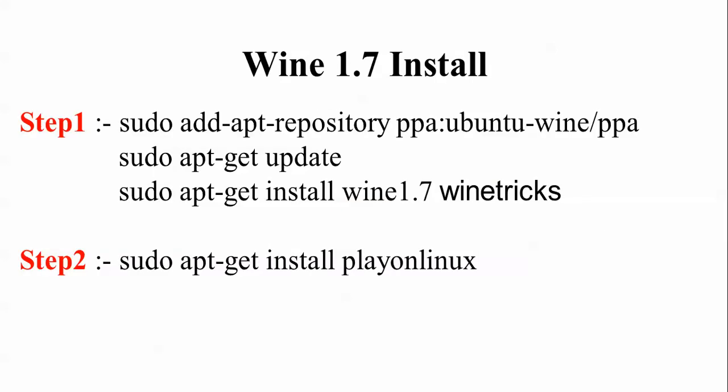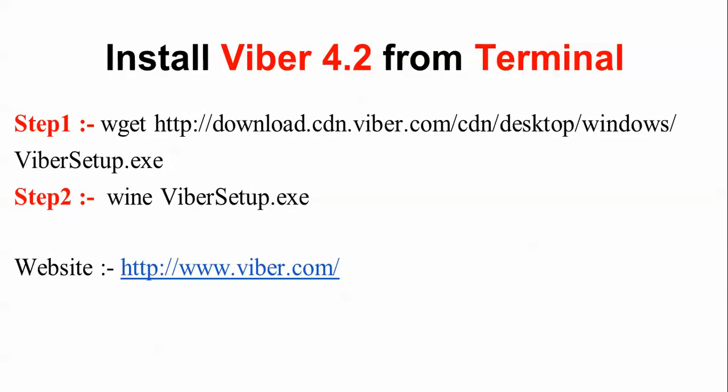Before you install Viber, you need to install Wine — version 1.7, the latest version. To install Wine, this is the four-step command procedure you need to follow. After that, I am going to install Viber from the terminal.